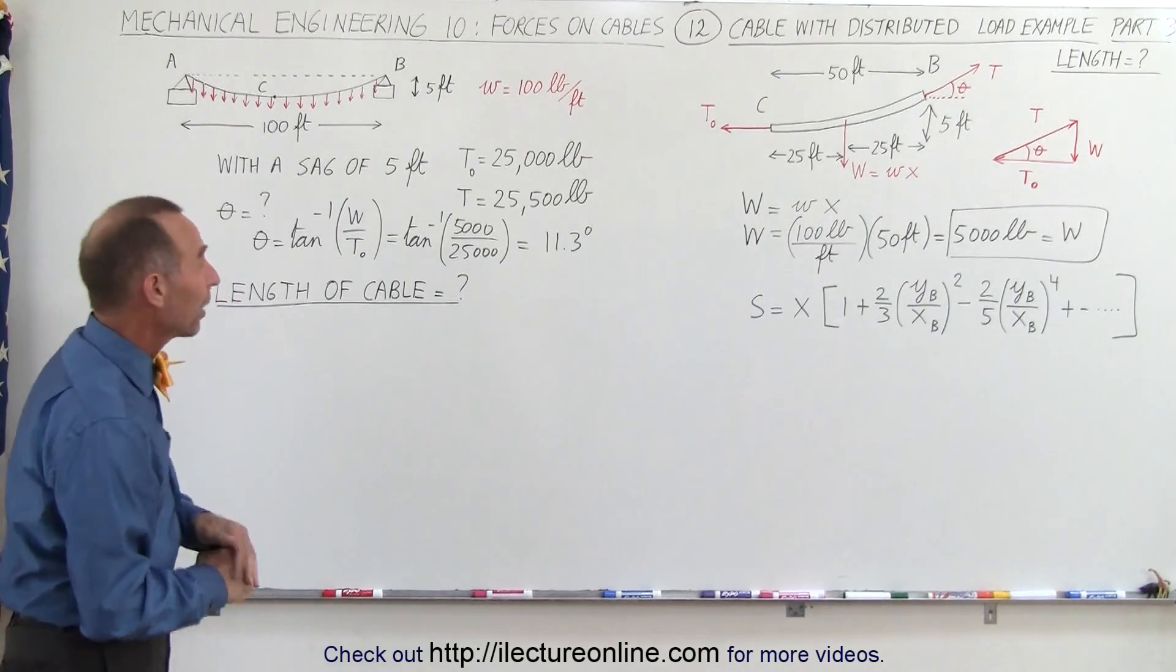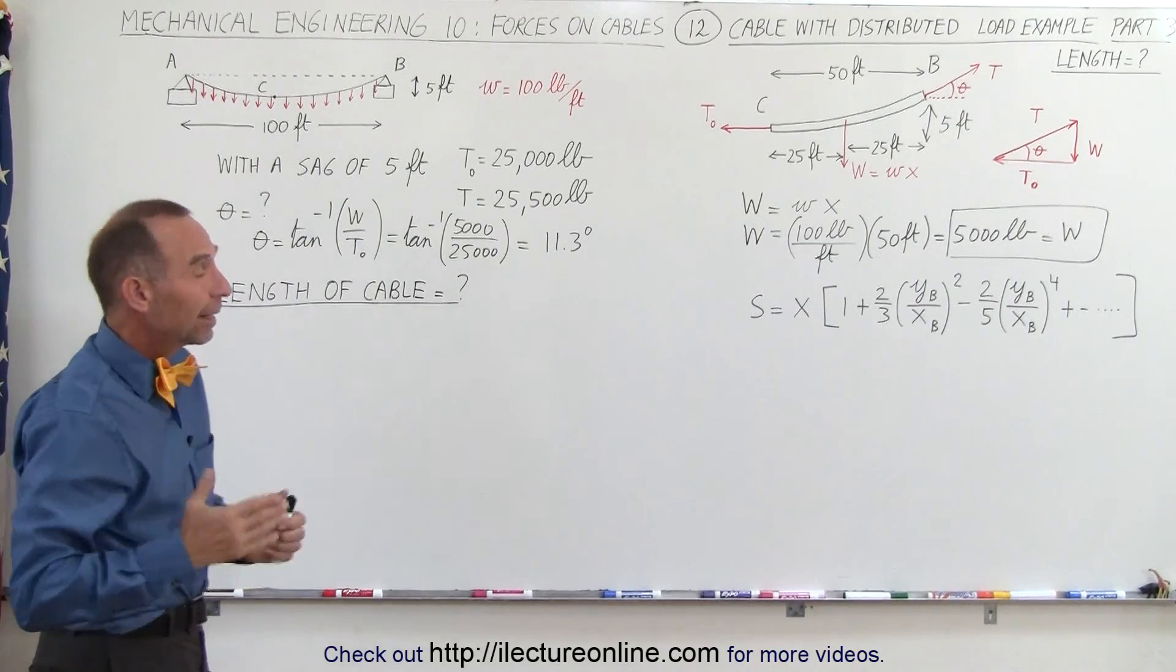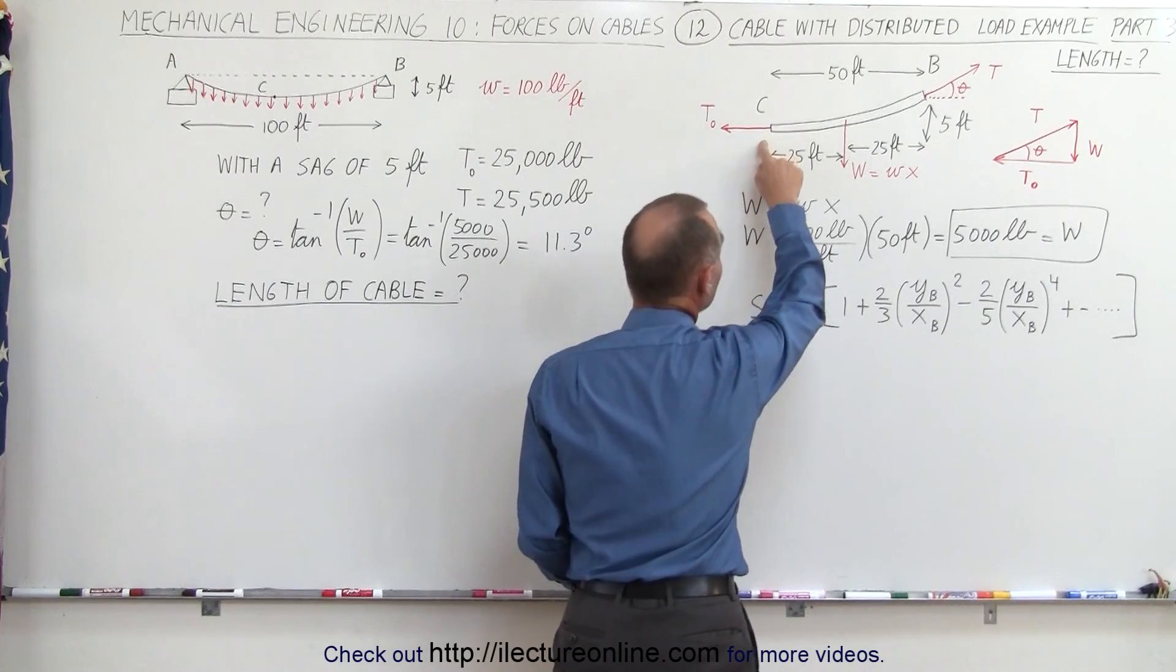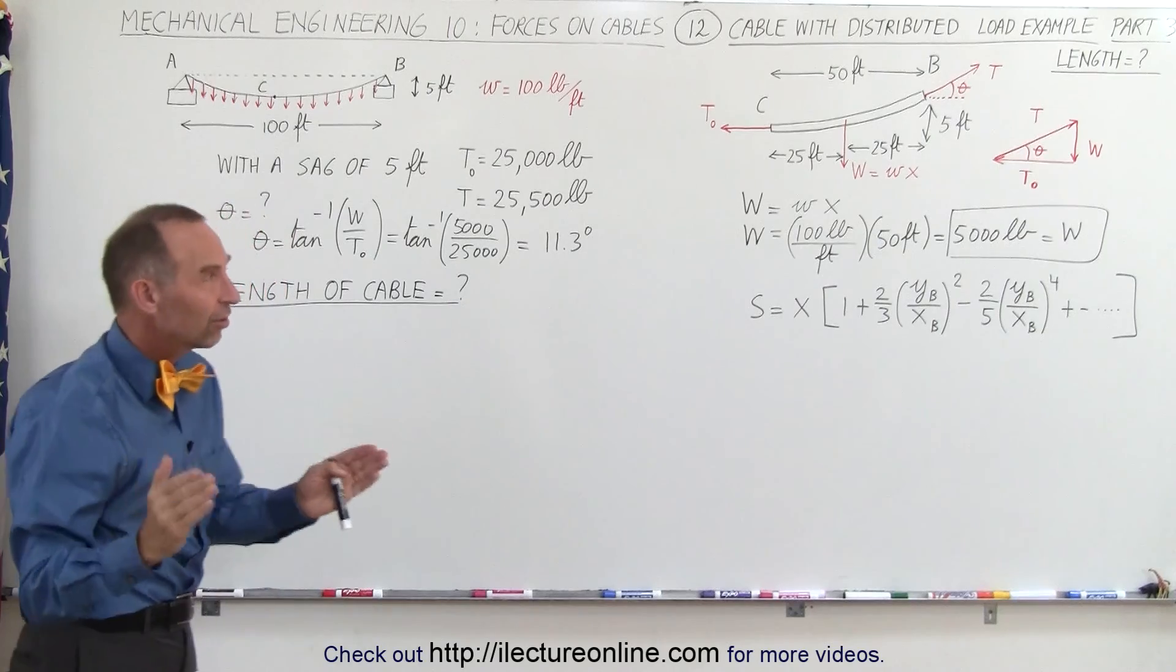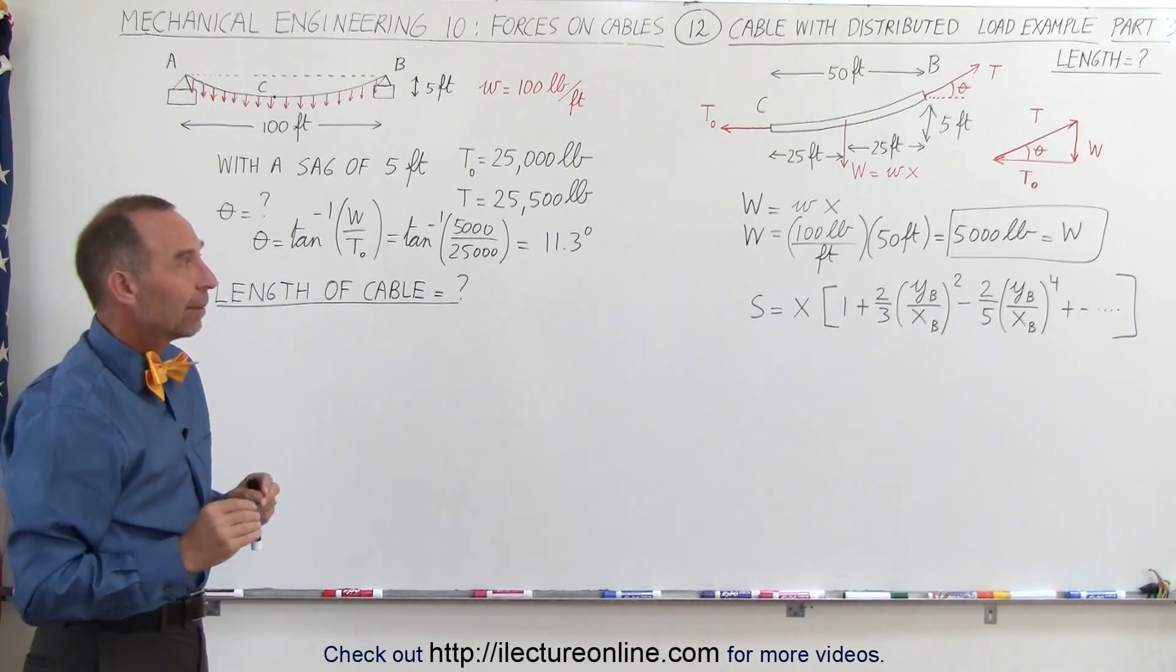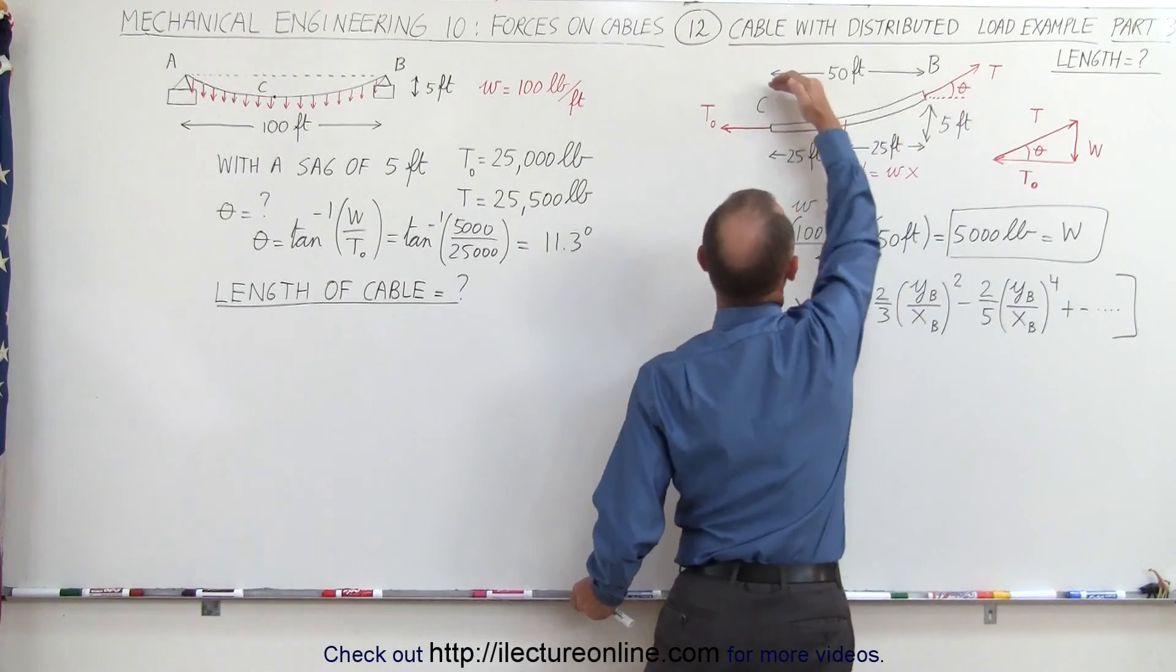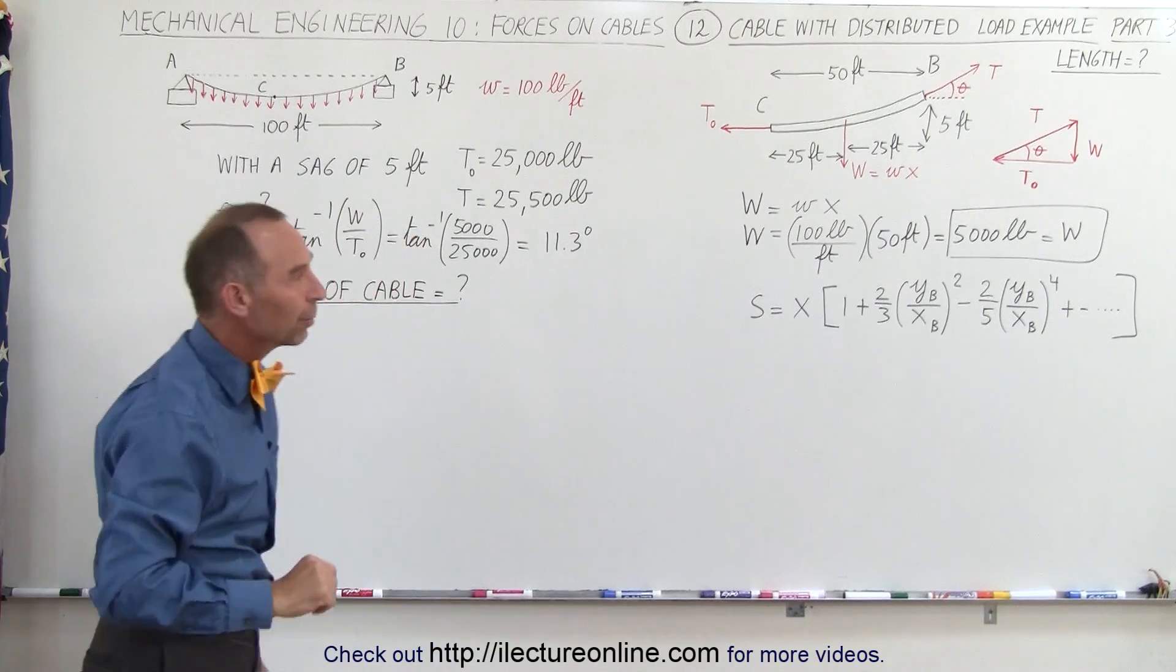We're going to go back to the original problem, but what we are going to calculate here is the length of the cable, and let's do it for the section from point C, which is the lowest point in the cable, to the attached point B. Now we know that the horizontal distance is 50 feet, but we do know there's a sag of 5 feet between where it's attached at B and where it gets down to right there in the middle of the cable. So how long is that section of cable?